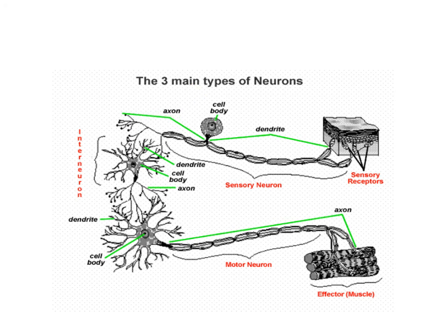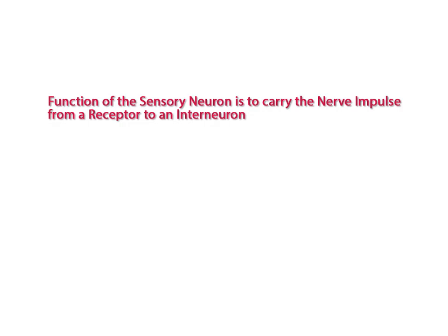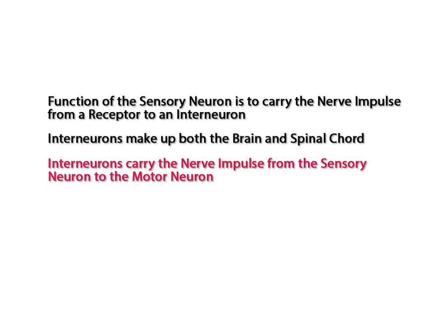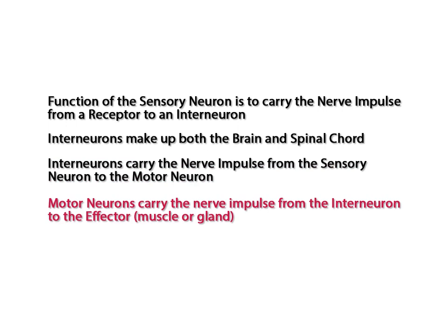If instead of structure we are comparing the functions of the three types of neurons, comparisons are easily made. The function of a sensory neuron is to carry the nerve impulse from the receptor, which initiates the nerve impulse, to an interneuron. Remember that interneurons make up both the brain and the spinal cord. The function of the interneuron is to carry the nerve impulse from the sensory neuron to the motor neuron, and the function of the motor neuron is to carry the nerve impulse from the interneuron to an effector. Remember that the effector is either a muscle or a gland that responds to the stimulus that has been received.